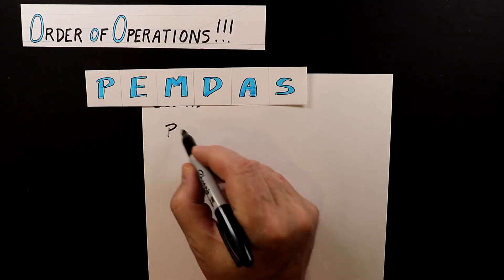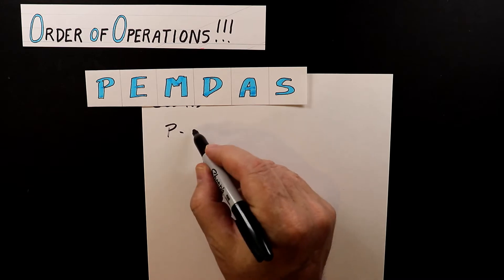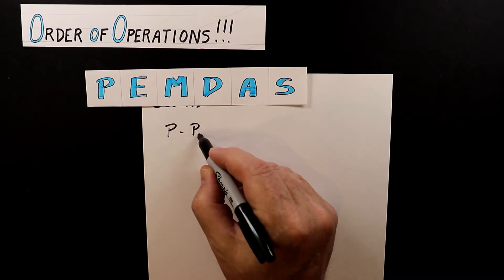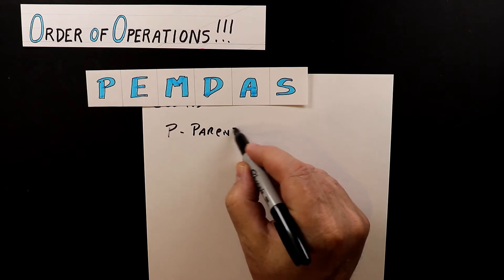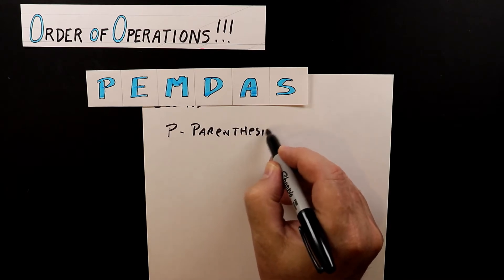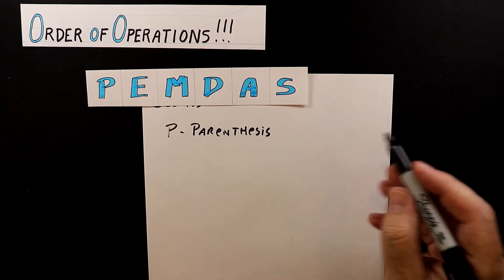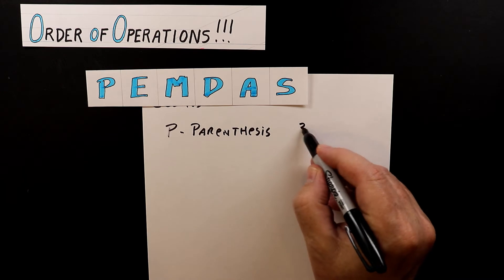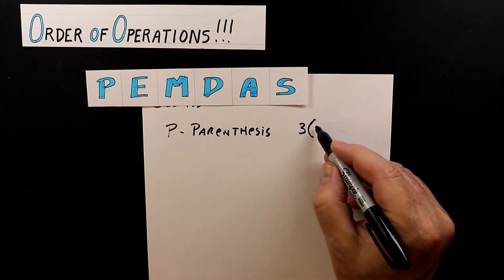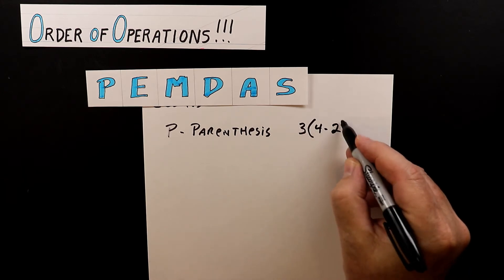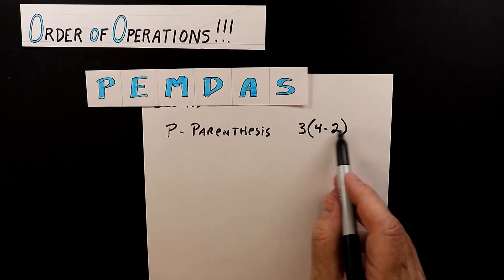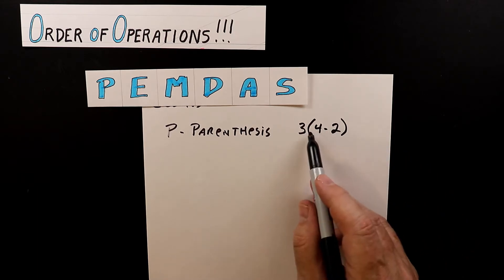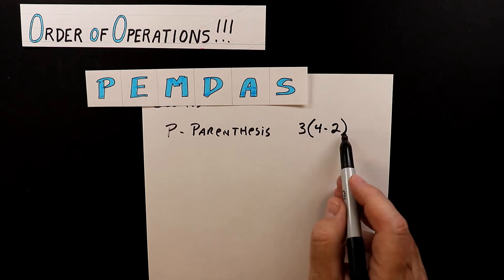The P stands for parentheses. An example would be three times (four minus two). The parentheses are the things between the left parenthesis and right parenthesis marks.